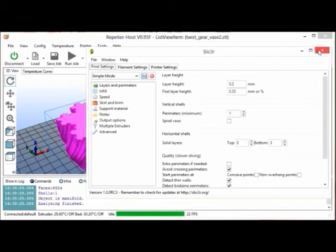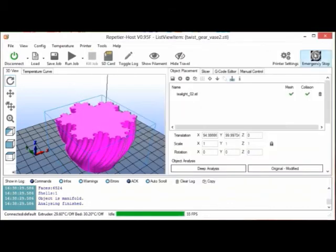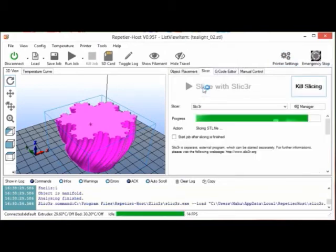Now in print settings, give appropriate settings for the test object you are printing. Save and close the slicer settings, then slice and print your first object.